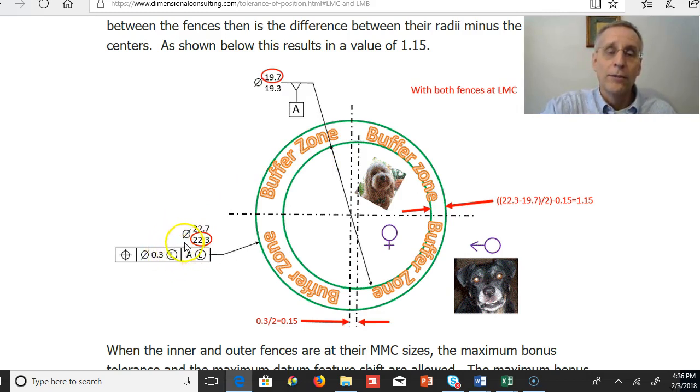So when we have the parts at their least material condition size, we have the inner fence being at its 19.7 size. That's the least material condition size for an internal feature size, the largest size. The least material condition size for the outer fence is going to be at its smallest size because it's an external feature size. So that's the 22.3.